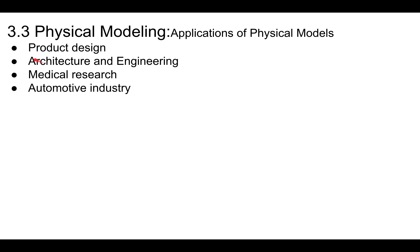Where do we use physical models? We use them in product design, architecture, and engineering. For example, at a university building they might have a scale model of what the entire university would look like — something built before the university itself was constructed. That's an example of a physical scaled model — an architectural model. Physical models are also used in medical research and definitely in the automotive industry.